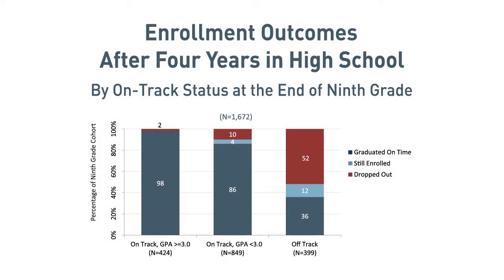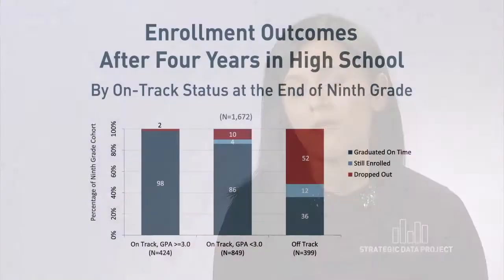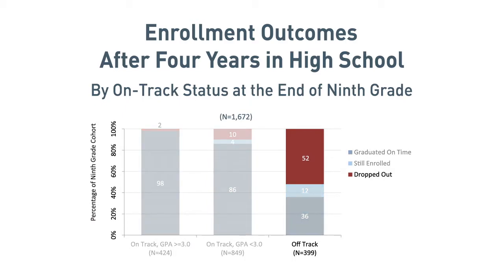I started by looking at high school completion rates at the end of ninth grade. Ninth grade is a critical year for high school students, and students who are off track to graduate at the end of ninth grade have not accumulated the necessary credits to move on to tenth grade. Once a student falls off track, it is very likely that he or she will not graduate high school on time or drop out. I found that of our off-track students, over 50% of them eventually dropped out.